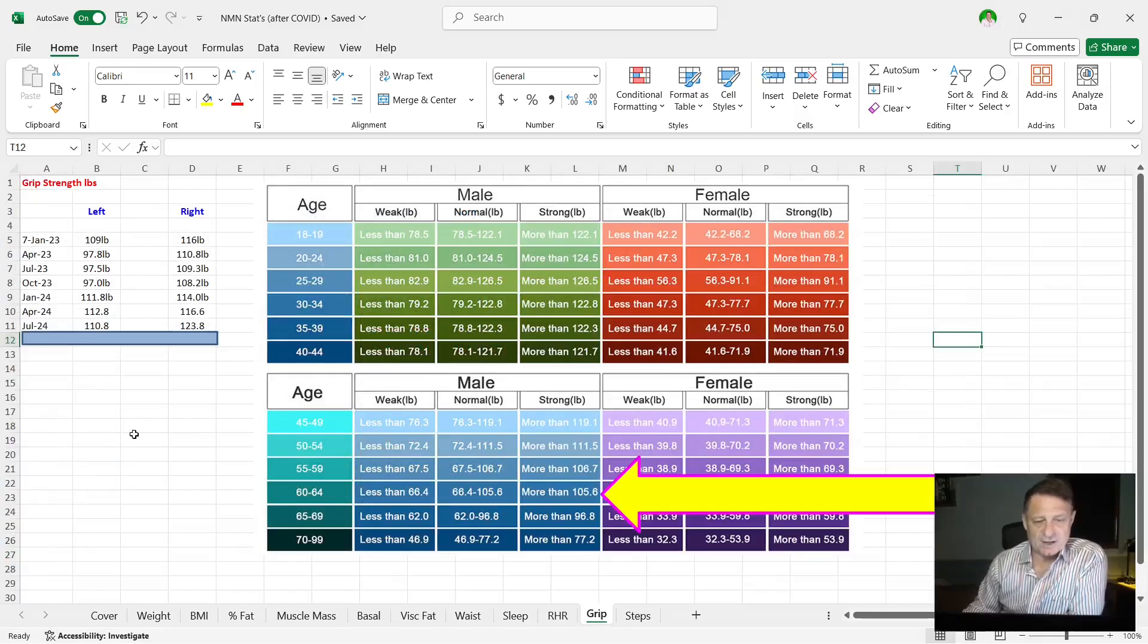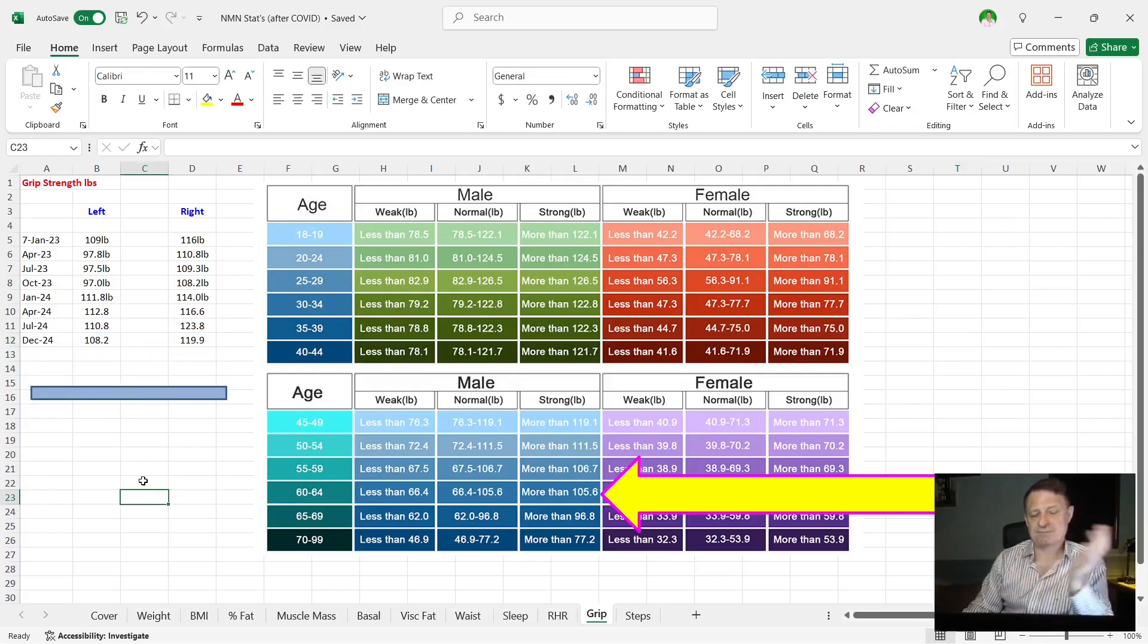Then we're going to move on to my grip strength. Last time, 110 for my left hand, 123 for my right hand. You can see this time down slightly 108 for my left hand and 119.9 for my right hand. Had I not had the injury, which kept me at the gym for four or five, maybe six weeks, I think this would have been the same, if not a bit higher because I've been using obviously my hands to grip and lift weights. That said, this still has me would be between the age of 60 and 64, more than 105, which those definitely are, has me in the strong range for men.